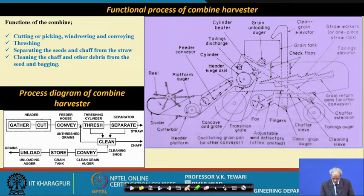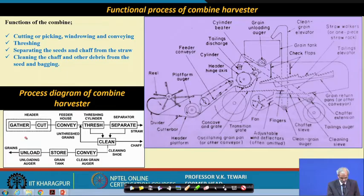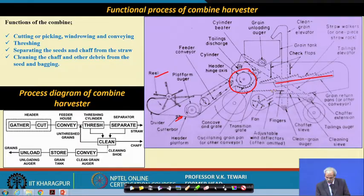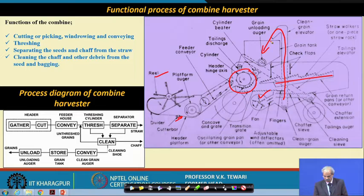Looking at the process diagram in detail: the reel at the front gathers the plants and the cutter bar cuts them. There is also an auger for conveying, a threshing section, and the straw walker. After threshing, a fan blows away the straw, and the threshed grain falls through and is taken for bagging. This diagram shows all the details of a particular combine in one view.